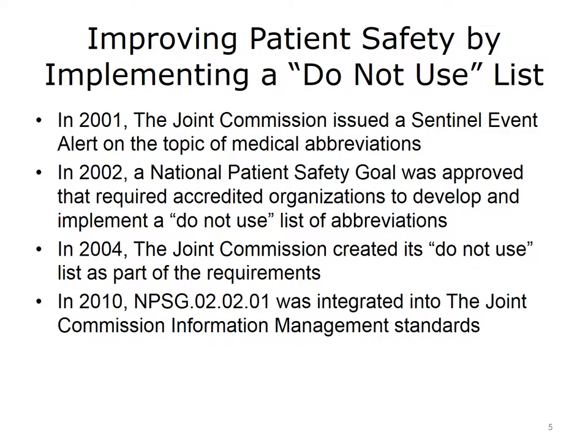Another aspect of patient safety is the implementation of a do-not-use list. In 2001, the Joint Commission issued a warning on the subject of medical abbreviations. Some medical abbreviations were confusing, and if used improperly, they could cause harm to patients. It became obvious that some abbreviations could no longer be used. In 2002, the Joint Commission approved a National Patient Safety Goal requiring accredited organizations to develop and implement a list of abbreviations that they would not use. In 2004, the Joint Commission created its own do-not-use list of abbreviations as part of the requirements, and in 2010, the National Patient Safety Goal was integrated into the Joint Commission Information Management Standards. By establishing a set of standards by consensus, the Joint Commission hopes to reduce the incidence of adverse events associated with the improper use of medical abbreviations.